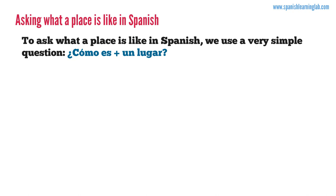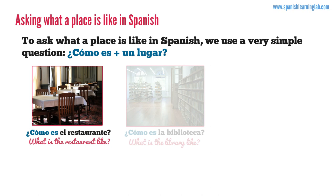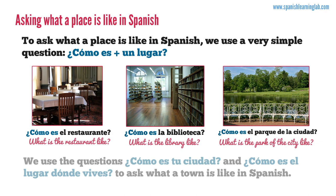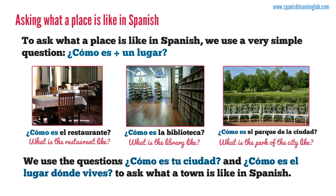Asking what a place is like in Spanish. To ask what a place is like in Spanish, we use a very simple question: '¿Cómo es?' plus a place. Here are some examples: '¿Cómo es el restaurante?', '¿Cómo es la biblioteca?', '¿Cómo es el parque de la ciudad?' We also use the questions '¿Cómo es tu ciudad?' and '¿Cómo es el lugar donde vives?' to ask what a town is like in Spanish.